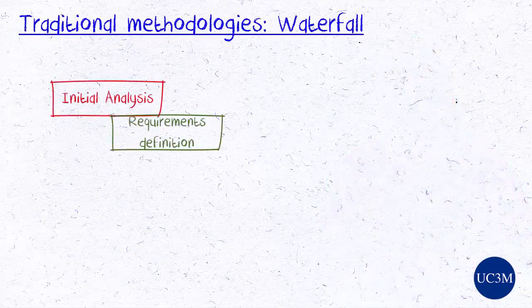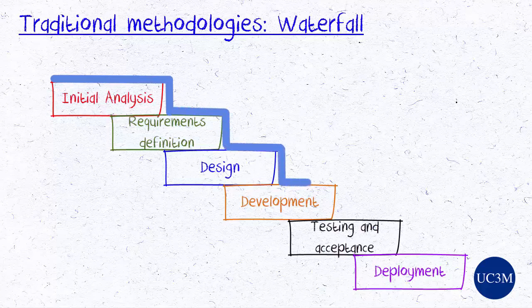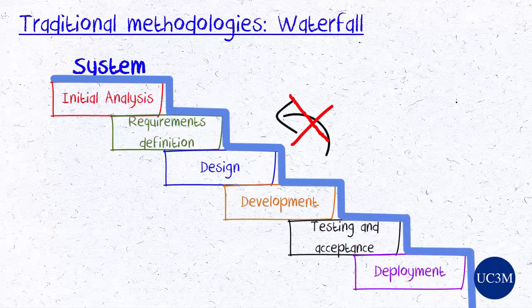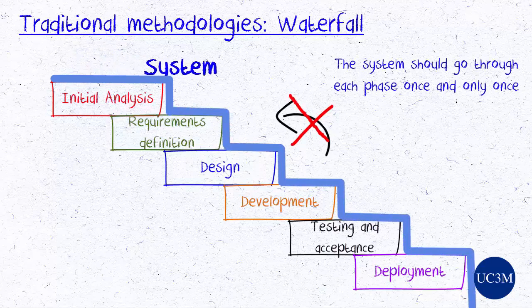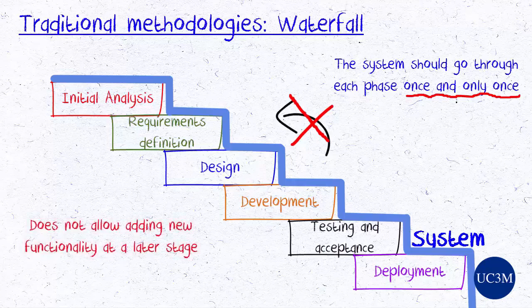Traditional development methodologies follow the so-called sequential or waterfall model. It resembles a tiered or multi-step waterfall in that once the water has fallen to a lower pool, it does not go back uphill to the previous ones. Similarly, the system being developed should go through each of the phases once and only once. For example, once the requirements definition or functional analysis phase is completed, all the requirements that the management information system must fulfill should have been fully specified. The methodology does not allow adding new functionality at a later stage.